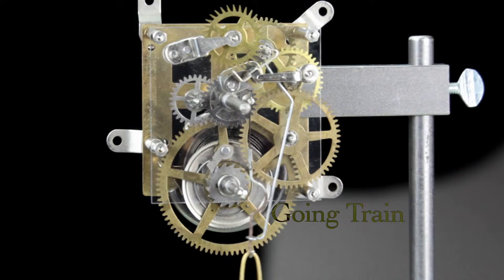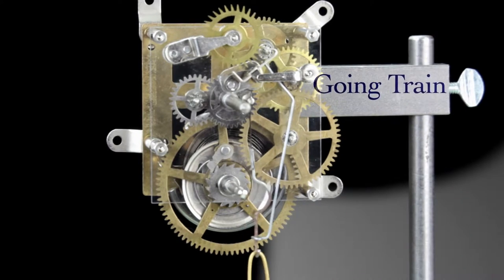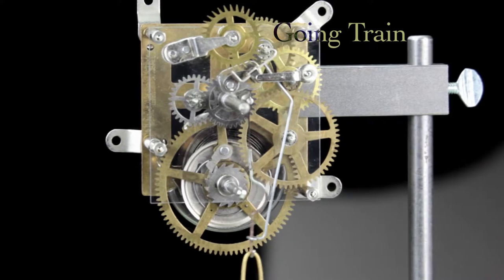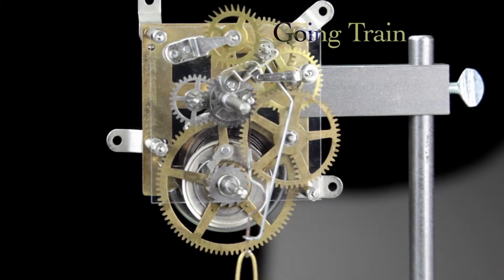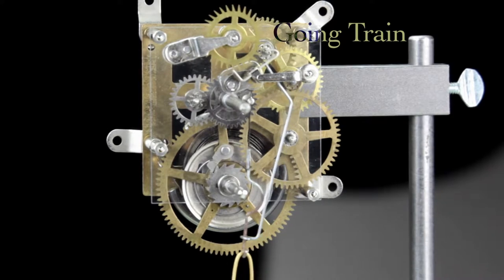There is still a direct unbroken line of wheels and pinions to transfer power from the mainspring and great wheel all the way up to the escape wheel. Of course we couldn't tell the time because we would no longer have an arbor in the clock turning once per hour, but the going train would operate normally.